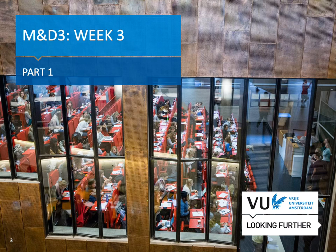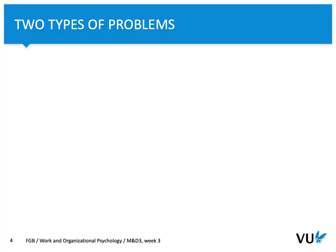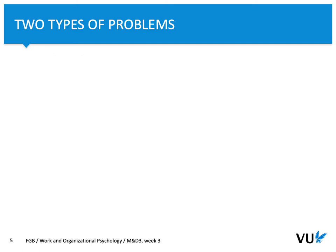In part one, we are going to focus on general aspects related to fairness. When we discuss fairness, we need to consider two problems in general: first, test bias, and second, test unfairness. Do you think that test bias is the same construct as test unfairness? Let's take a look at differences between both constructs. Test bias is, in general, a psychometric problem.